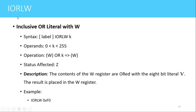The next instruction is IORLW — Inclusive OR literal value with the value present in the working register. Using this instruction we can perform the ORing operation of the 8-bit immediate value mentioned in the instruction and the value present in the working register, and the result is stored in the working register. The Z flag is affected. An example is IORLW 0xF0 — this immediate value 0xF0 will be ORed with the value in the working register and the result stored in the working register.